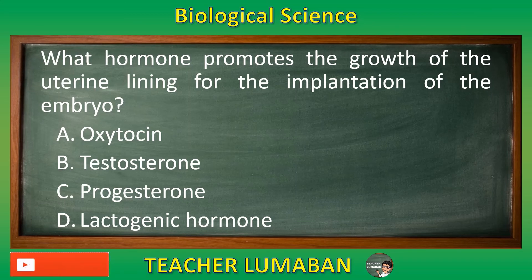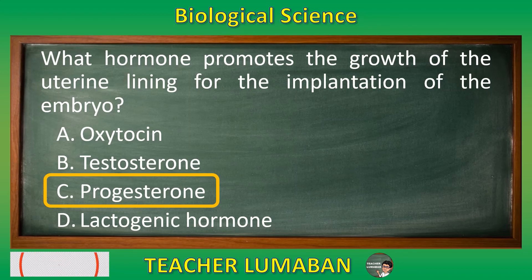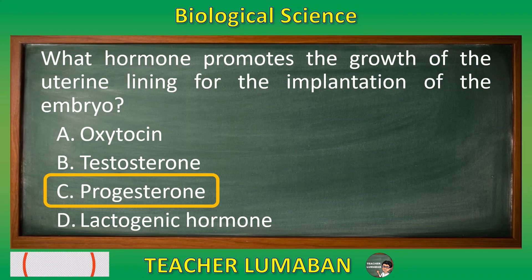The correct answer is Letter C: Progesterone. The progesterone hormone promotes the growth of the uterine lining for the implantation of the embryo.